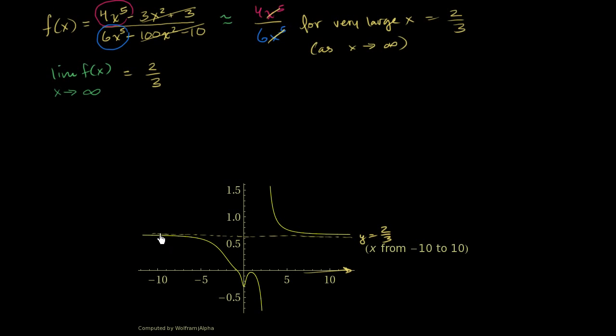When we look at the graph here, it seems like the same thing is happening from the bottom direction when x approaches negative infinity. So we could say the limit of f of x, as x approaches negative infinity, that also looks like it's 2 thirds. And we could use the exact same logic. When x becomes very negative, as it becomes further to the left on the number line, the only terms that are going to matter are the 4x to the fifth and the 6x to the fifth.